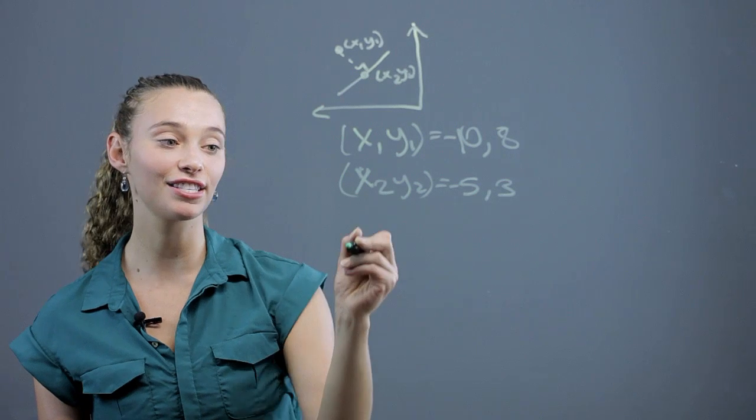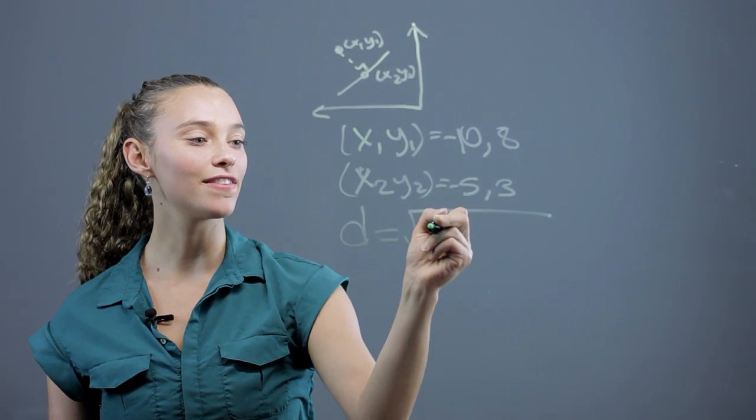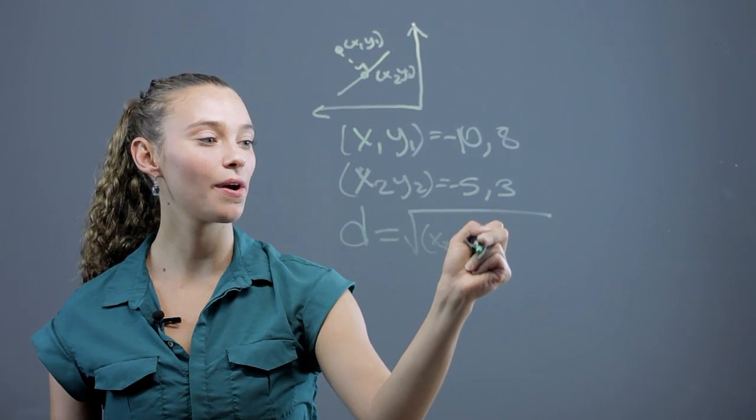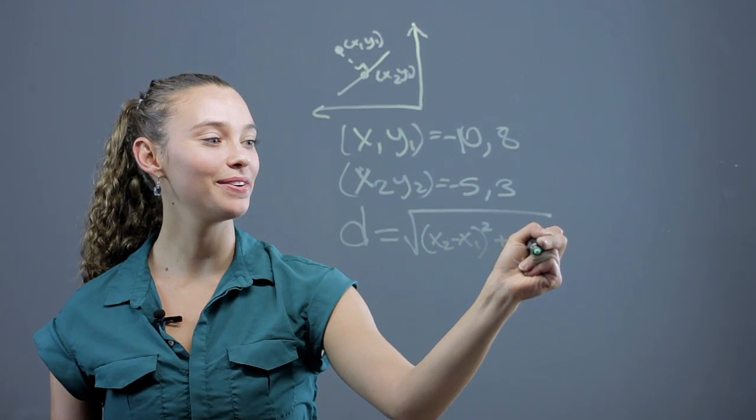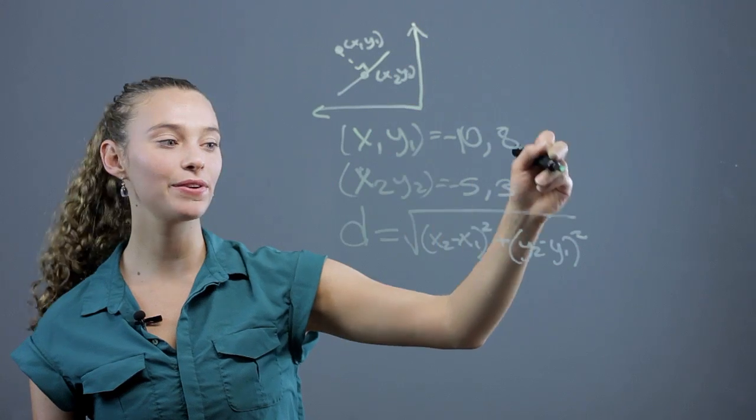Now we use the distance formula. The distance is the square root of x2 minus x1 quantity squared plus y2 minus y1 quantity squared.